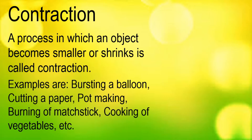When a balloon bursts it shrinks and becomes smaller, so that's why it is an example of contraction. Cutting a paper also makes the paper smaller, and pot making also makes things smaller — that's why they come under contraction. Burning of matchsticks and cooking of vegetables are examples of both contraction and expansion.